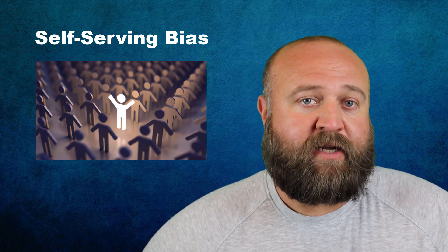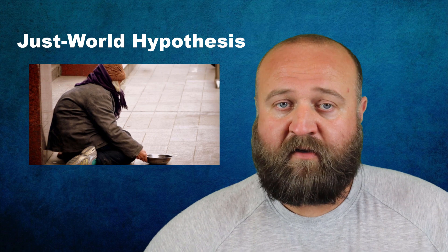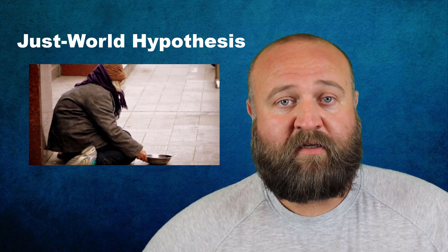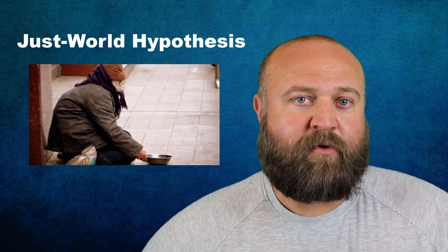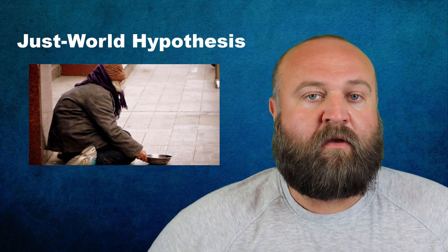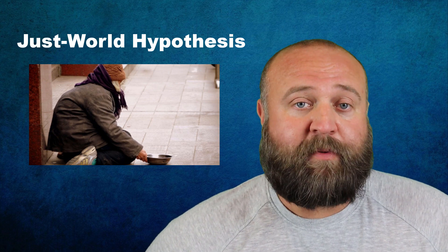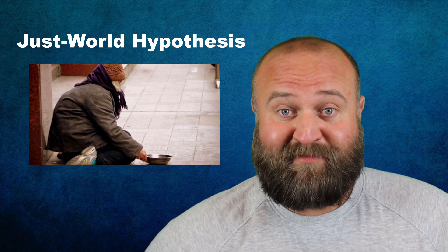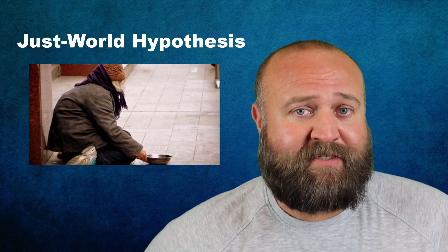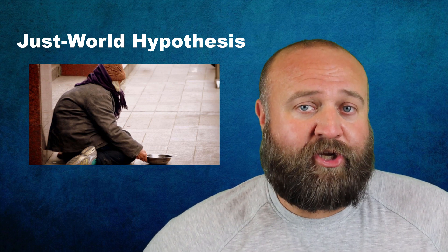Another example of how our western over-reliance on dispositional traits influences social thinking is something called the just world hypothesis. The just world hypothesis is the belief that people largely get the outcomes in life that they deserve. This is a great example in psychology of there being a difference between what we tend to believe to be true versus what we logically know to be correct. Most of us know logically that bad things can absolutely happen to good people, and good things sometimes happen to really bad people.